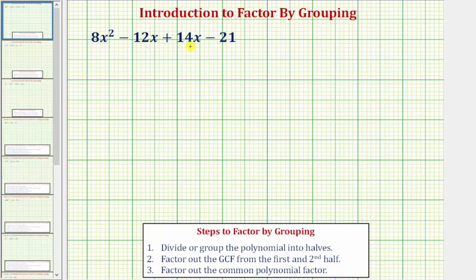Notice how these two middle terms are like terms. So because negative 12x plus 14x equals 2x, this expression is equivalent to 8x² plus 2x minus 21.